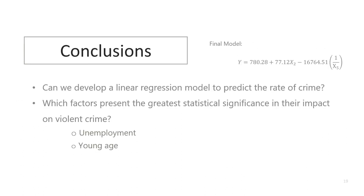We can now revisit our research questions. With our best linear regression model, we can account for about 44% of the crime. The final model contained two significant predictors and did not violate any of the first order assumptions, so we can conclude that with this data set, we have successfully developed a linear regression model to predict crime. Additionally, we looked at which factors present the greatest statistical significance in their impact on violent crime, and our hypothesis tests on the final model conclude that both unemployment and young age are significant.